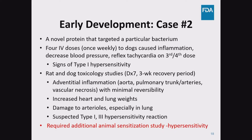In the next example, also an NME, the product was a novel protein targeted to a bacterium. Four weekly IV doses to dogs caused inflammation, decreased blood pressure, and reflex tachycardia after the third or fourth dose. The animals showed evidence of a type 1 hypersensitivity or anaphylactic response. Seven-day rat and dog toxicology studies with a three-week recovery period showed adventitial inflammation, increased heart and lung weights, and damage to arterioles, particularly in the lung. It was suspected that both type 1 and type 2 hypersensitivity reactions were occurring. The sponsor was placed on full clinical hold and required to conduct an animal sensitization study.